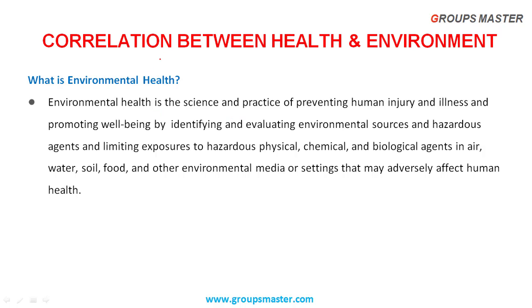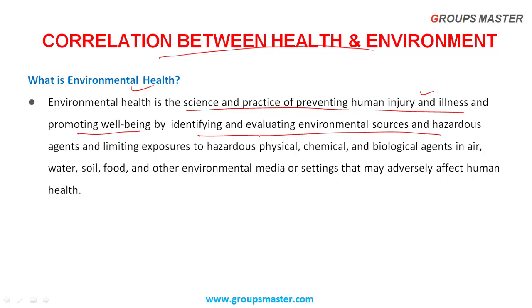Correlation between health and environment. What is environmental health? Environmental health is the science and practice of preventing human injury and illness. The aim is to promote well-being by identifying and evaluating environmental sources and hazardous agents, and limiting exposures to hazardous physical, chemical, and biological agents in air, water, soil, and food.